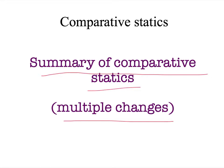I'm going to run through a couple of examples to show you how, in general, when there are multiple changes, there will be an unambiguous change in our prediction of either the price or the quantity transacted, but we won't get unambiguous predictions about changes to both the predicted price and the predicted quantity. Let me show you what I mean.